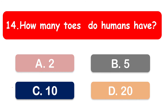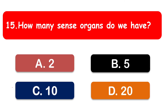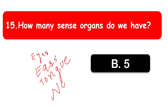My last question: how many sense organs do we have? The options are 2, 5, 10, and 20. We have five sense organs. They are eyes, ears, tongue, nose, and skin. These are our five sense organs. Thank you.